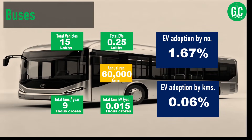For buses, there are 15 lakh buses in India, of which around 25,000 are EVs, making an EV adoption rate of 1.67% by number. Considering 60,000 kilometers run annually by buses, the EV adoption rate by kilometers is 0.06%. All the underlying figures — total kilometers driven per year and EV kilometers per year — are available on screen.